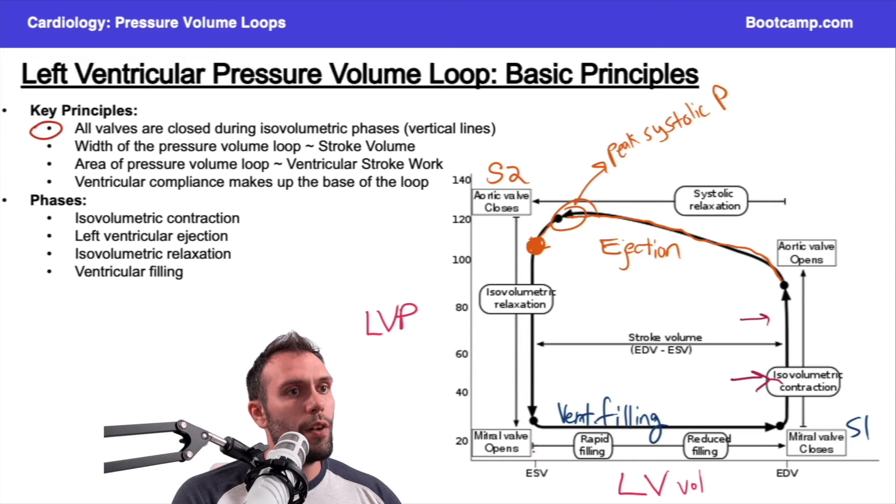We already said stroke volume, the amount of blood, the forward stroke volume, the amount of blood ejected from the heart, is going to be equal to the end diastolic volume minus the end systolic volume. That's the amount of blood that's ejected.